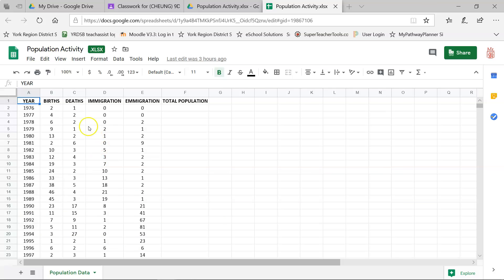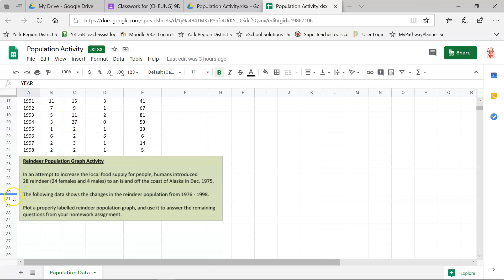Alright, so looking at the top over here, 1976, here's some information. These are how many births during each of the years that we've been looking at, the deaths that occurred during those years, how many reindeer immigrated into the area and how many emigrated out of the area. And what we need to do is we need to calculate what is the total population at the end of each year.